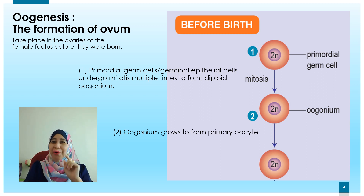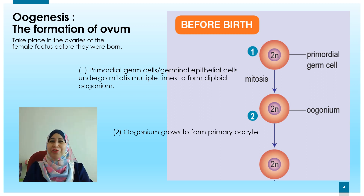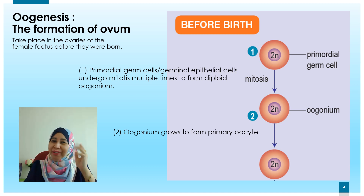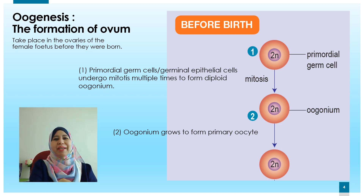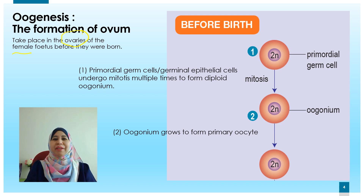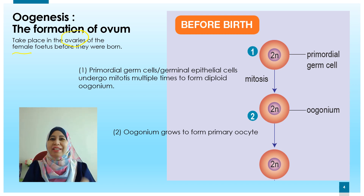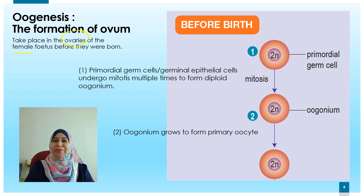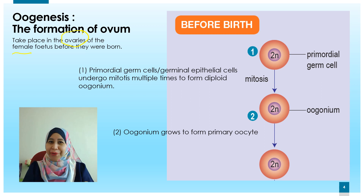Oogenesis is the formation of ovum. Where does it take place? It takes place in the ovaries of the female, even before the female fetus was born.